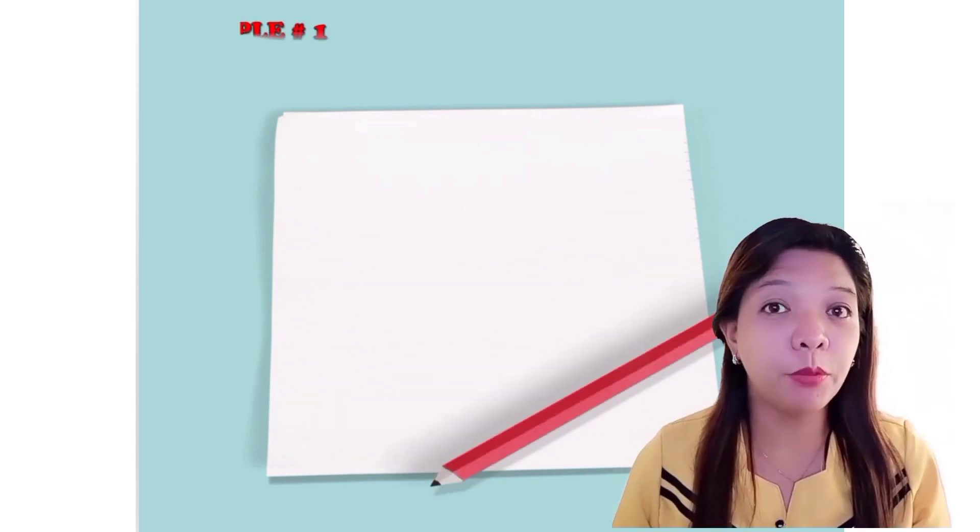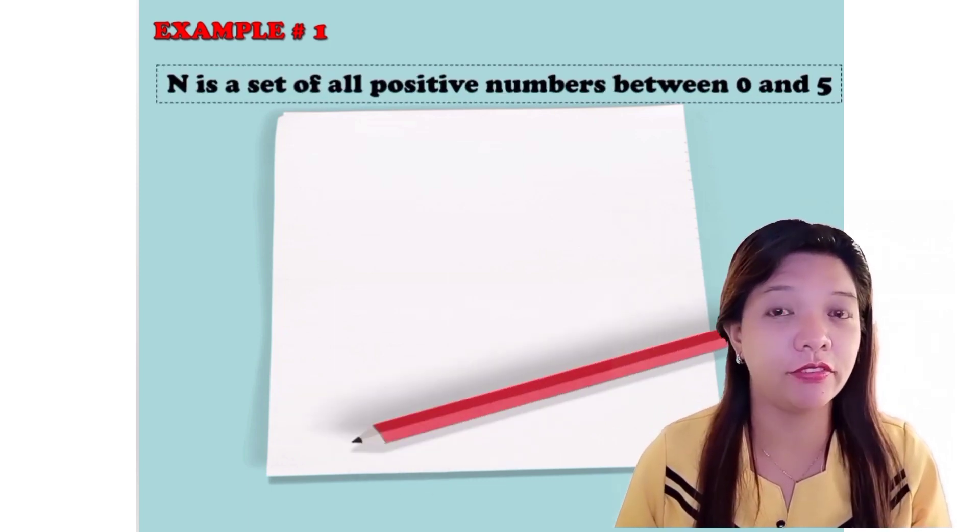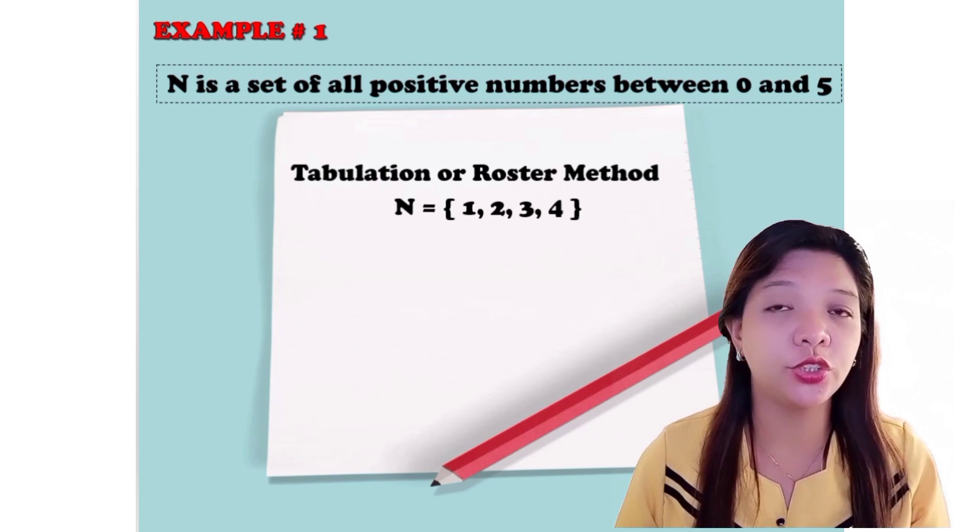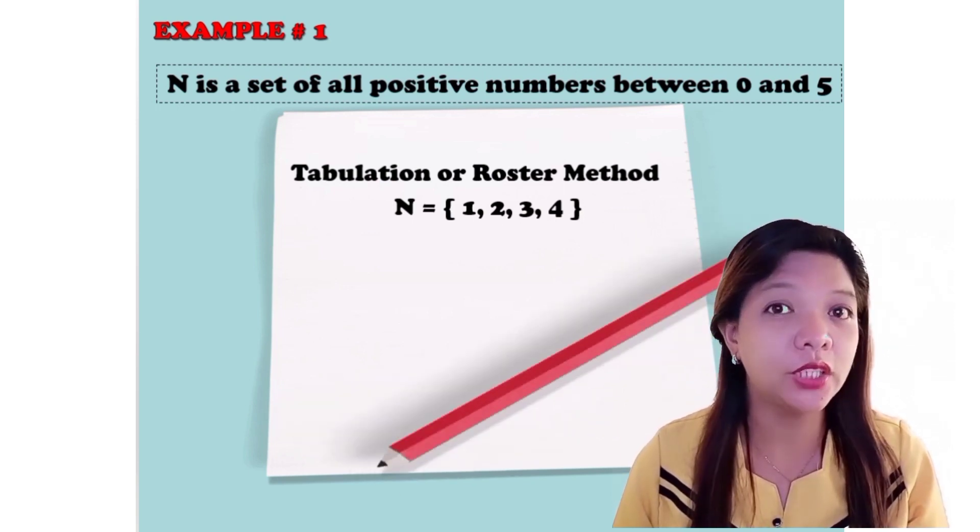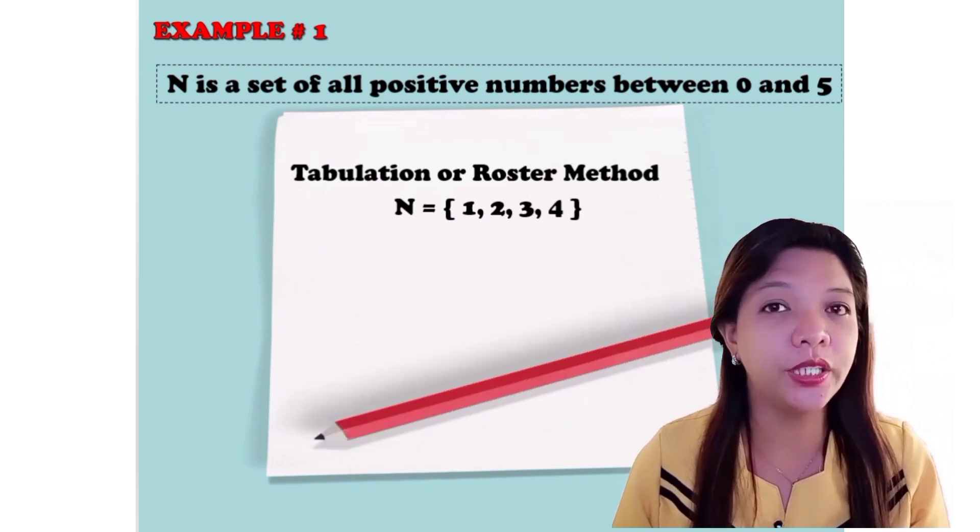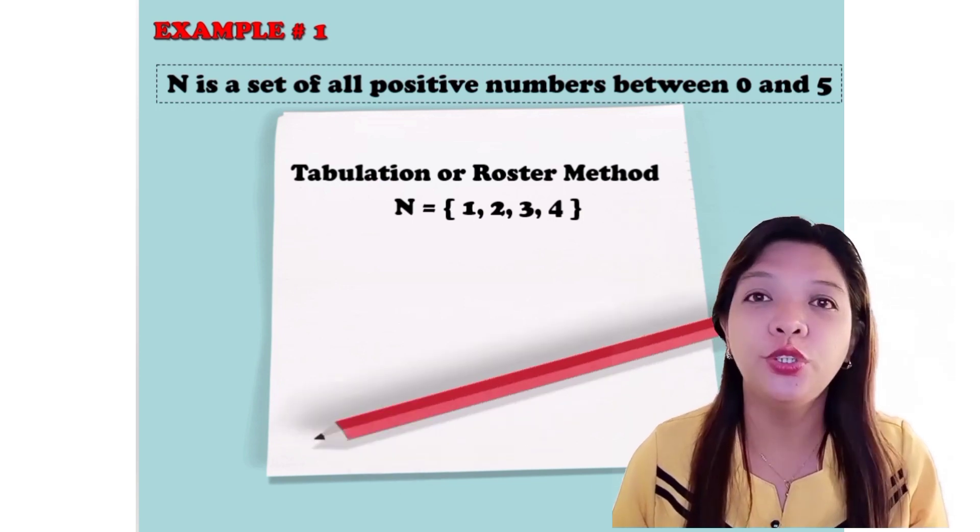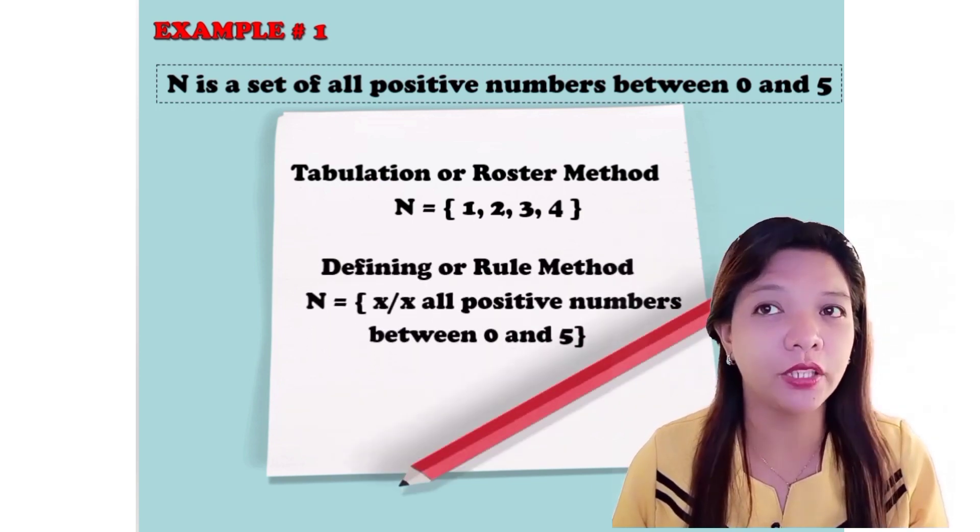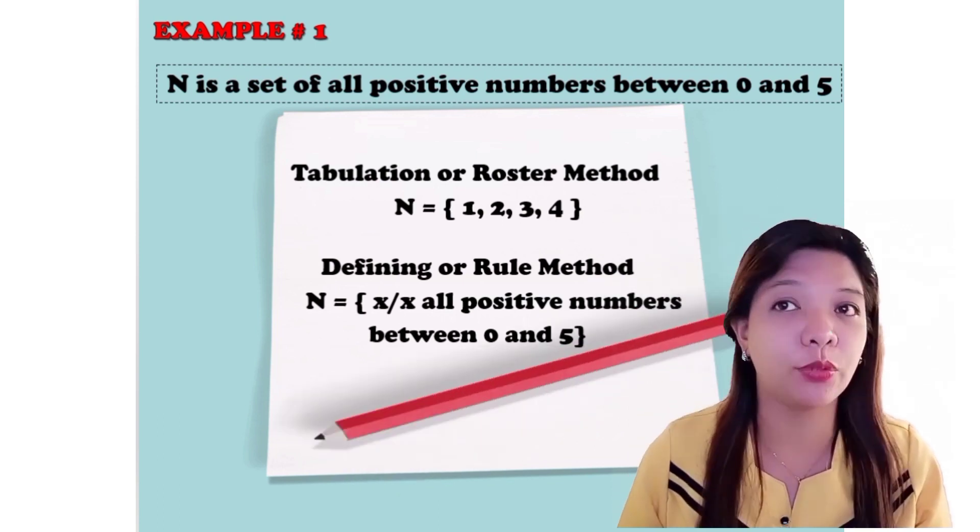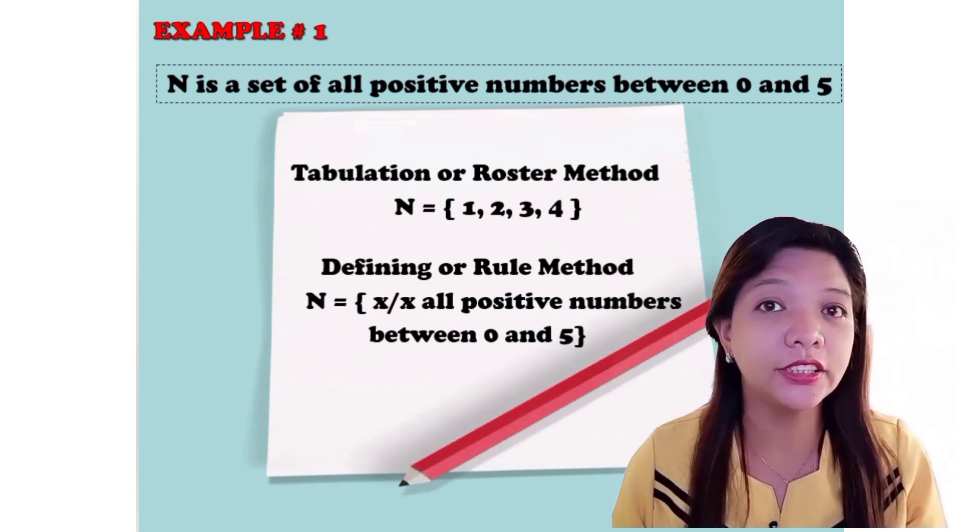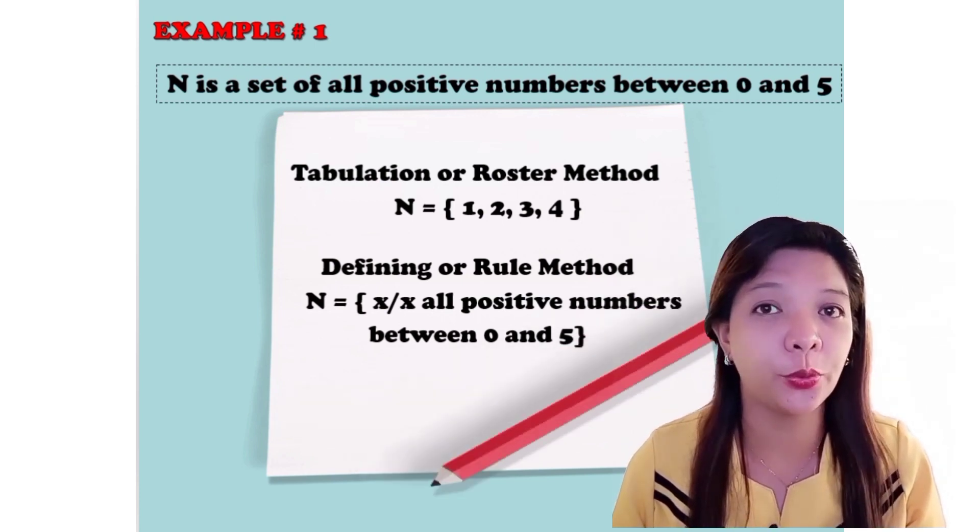Let's try example number 1. N is a set of all positive numbers between 0 and 5. Using tabulation or roster method, N equals open brace 1, 2, 3, 4, close brace. Now, using defining or rule method, N equals open brace X such that X, all positive numbers between 0 and 5.